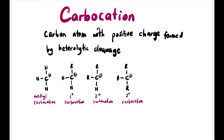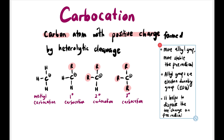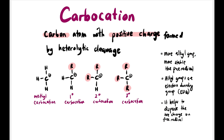What about carbocations? A carbocation is a carbon atom with a positive charge, formed by heterolytic cleavage. They are named methyl, primary, secondary, and tertiary carbocation according to how many R groups are attached. The C+ is electron-deficient, so more alkyl groups mean a more stable carbocation.